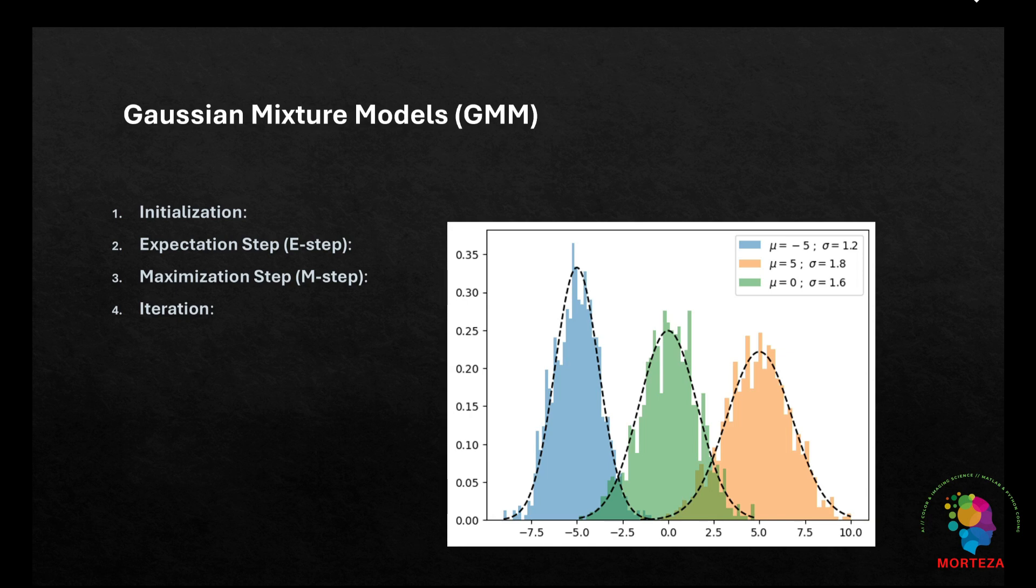In the initialization step, the algorithm defines the initial parameters for the Gaussian distributions, like means, covariances, and weights. In the expectation step, the algorithm calculates the probability of each data point belonging to each Gaussian distribution. In the maximization step, the algorithm updates the parameters of the Gaussian distributions based on the probabilities computed in the E step. In the iteration step, the algorithm repeats the E step and M step until convergence.